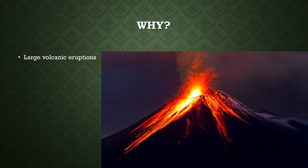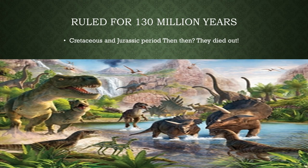Why did Pangea split? Very large volcanic eruptions. The dinosaurs then ruled Earth for about 130 million years, mostly during the Cretaceous period and the Jurassic period.